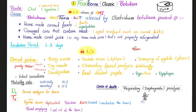Type number one: foodborne botulism. Route: oral. You ingest a preformed toxin. How? Home-canned foods, improperly canned meat, improperly canned aged seafood such as cured fish. For example, a dented tuna can — bacteria will enter, and thanks to those anaerobic conditions, it will start making spores and toxins.